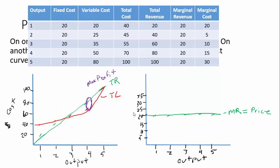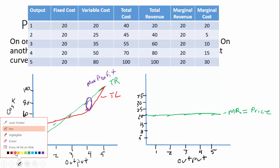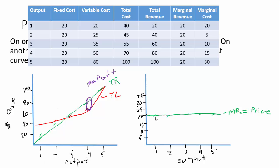Now let's do marginal cost in red. The first marginal cost at output of one is $20. At two it's $5, so our marginal cost curve is sloping downward to begin with. Then it comes up: at three it's $10, at four it's $15, and at five it's $30.